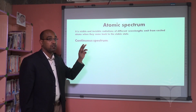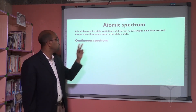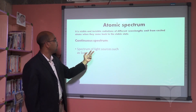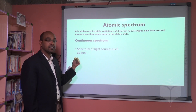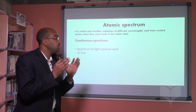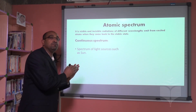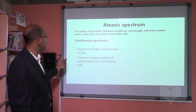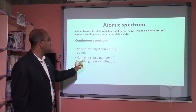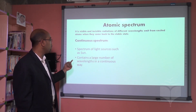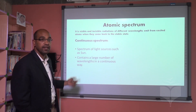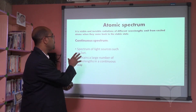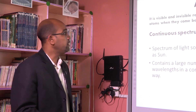We have two types of spectrum. First is the continuous spectrum, which is the spectrum of light sources such as the sun. When the sun gives us light, it consists of many radiations in a continuous way. The continuous spectrum contains a large number of wavelengths in a continuous way — meaning there are no missing parts; all radiations are present.